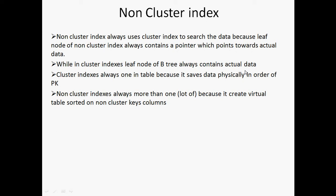Both of these indexes follow the B-tree structure. The leaf node of the clustered index contains the data, while in a non-clustered index the leaf node does not contain the data — it points toward the clustered index, and the clustered index will point towards the data. There is always only one clustered index in a table because it saves the data physically in the order of the primary key.